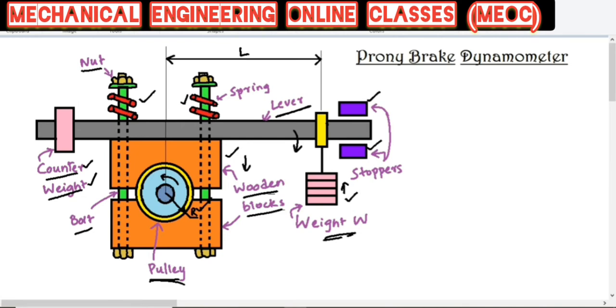Because the wooden block is pressed against the pulley, there is friction developed between the pulley and the wooden block. Because of this, the pulley will slow down, or depending upon the amount of weight added, it will stop.